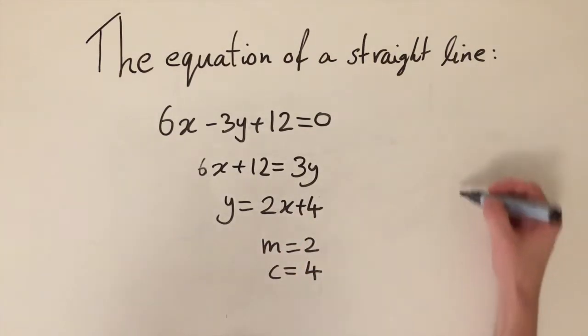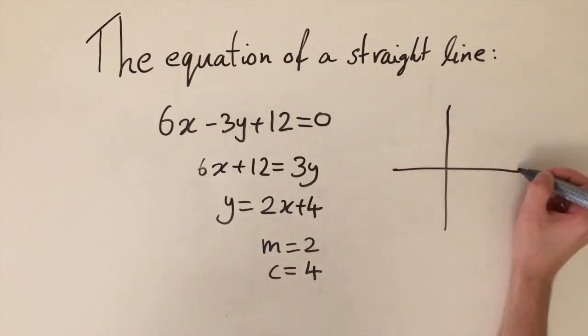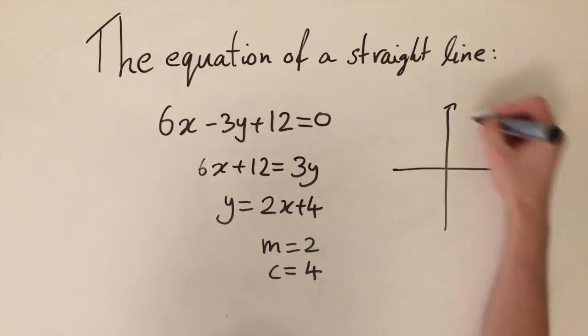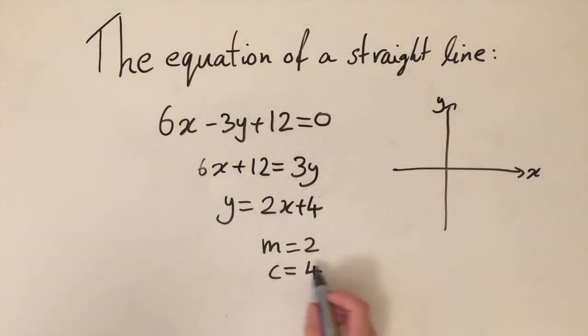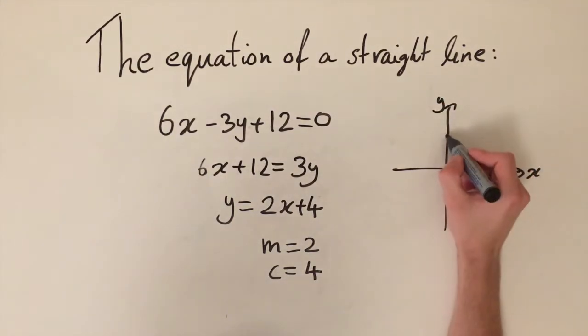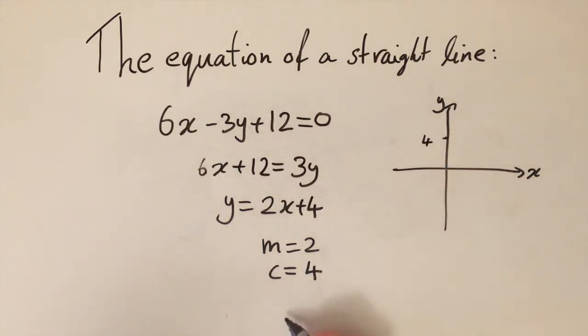So just like before, we can go ahead and sketch this line just to get a sense of what it looks like. Okay, so we know that it crosses the y-axis at 4. Let's draw this over here for example. And we also know that the gradient is 2. So it's positive, so it's going upwards.